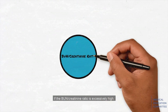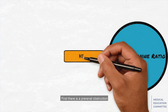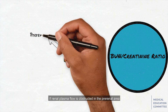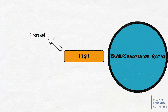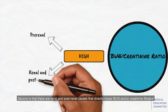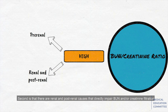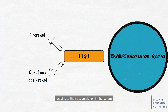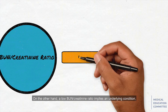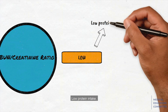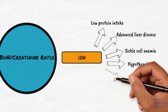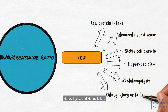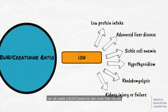If the BUN-creatinine ratio is excessively high, there can be two explanations. First, there is a pre-renal obstruction — if renal plasma flow is obstructed in the pre-renal area, BUN naturally rises due to the decrease in GFR. Second, there are renal and post-renal causes that directly impair BUN and/or creatinine filtration, leading to their accumulation in the serum. On the other hand, a low BUN-creatinine ratio implies an underlying condition. Low protein intake, advanced liver illness, sickle cell anemia, hypothyroidism, rhabdomyolysis, kidney injury, and kidney failure can all create a BUN-creatinine ratio lower than normal.